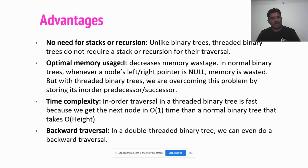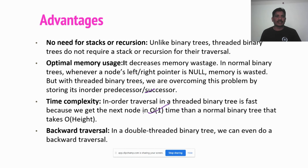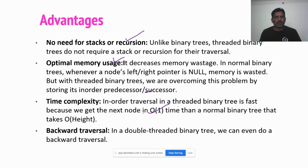What are the advantages of the threaded binary tree? The first advantage is no need for stacks or recursion, because there is no other data structure required to traverse all the nodes. Traversing is very fast compared to the normal binary tree. The second advantage is optimal memory usage — it decreases memory wastage. In a normal binary tree, whenever a node's left or right pointer is null, that memory is wasted. With the threaded binary tree, we can decrease that memory wastage.